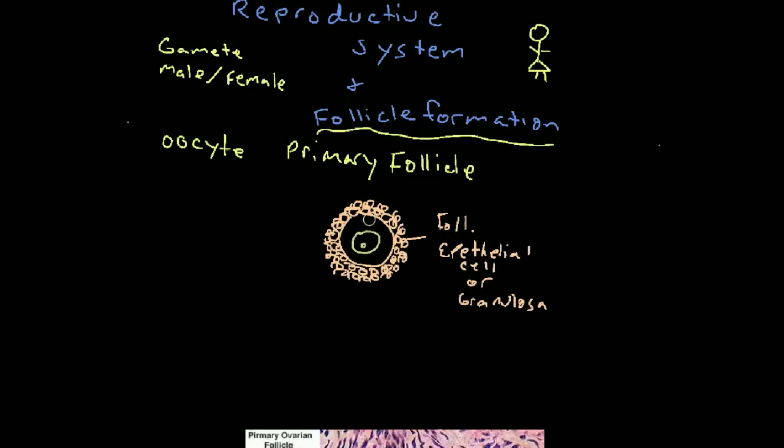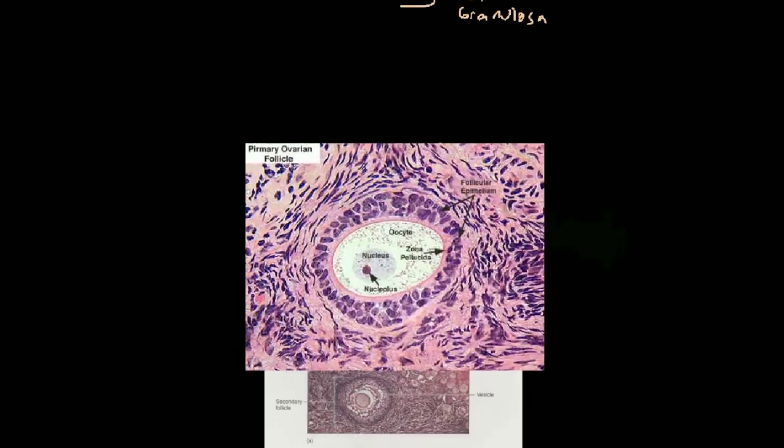When the primary oocyte is inside this container of epithelial tissue, it's called a primary follicle. So this whole thing is called a primary follicle, and that's what it looks like. This is a picture of what it would look like underneath the microscope, that right there.